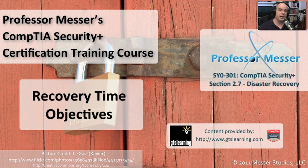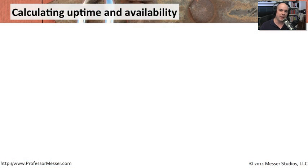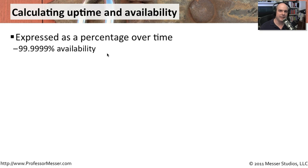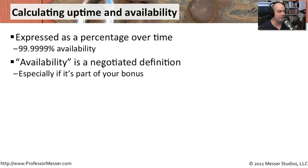In IT, we are always striving for 100% uptime. But unfortunately, we're dealing with extremely complex systems, and there's going to be occasions where some of the resources in our environments are not going to be available for our end users. Usually, we talk about availability as a percentage — something being 99.99% available. If you have something that is 99.9999% available, that is six nines, which is an extremely available system that almost nobody achieves.